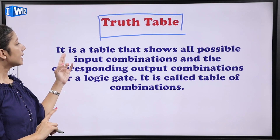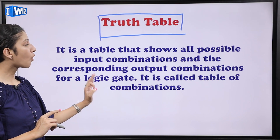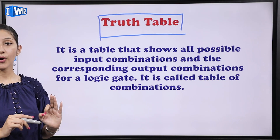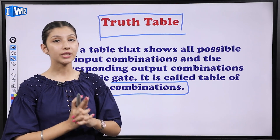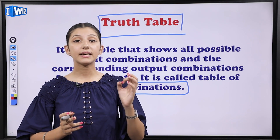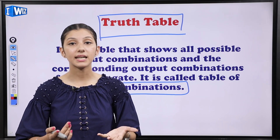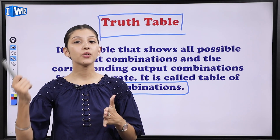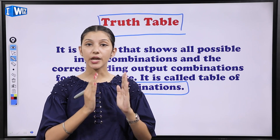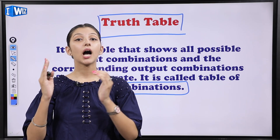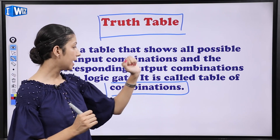These basic gates can be used to build a number of other gates — they are the building blocks. Every gate has single or multiple inputs and output. Every gate is represented by a symbol. First definition: truth table — it is a table that shows all possible input combinations and the corresponding output combinations for a logic gate. It is called the table of combinations. For example, if there are two inputs, the possible combinations are 2 raised to the power 2 — that is 4.